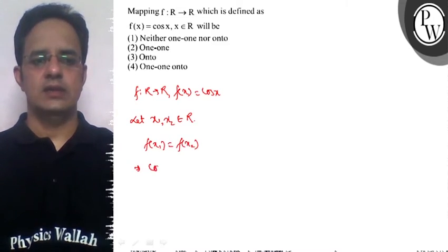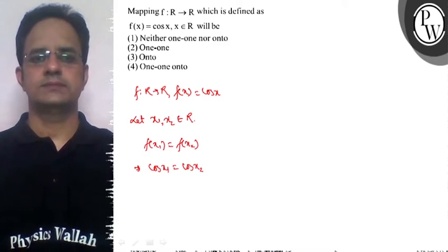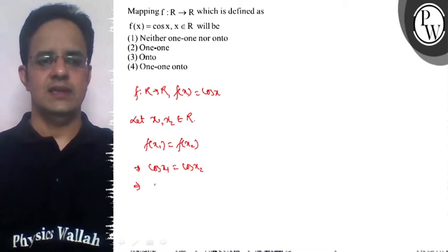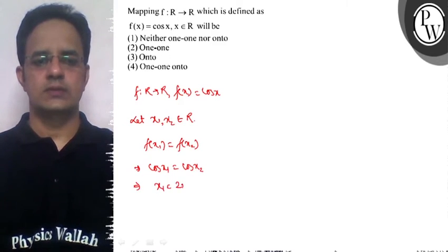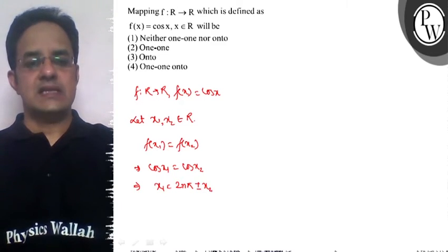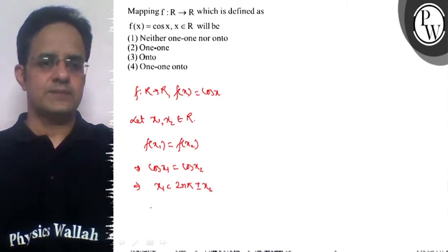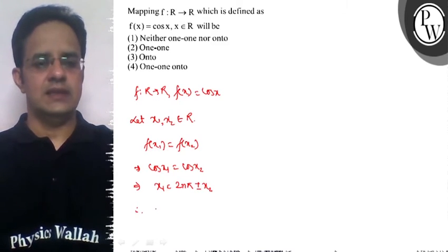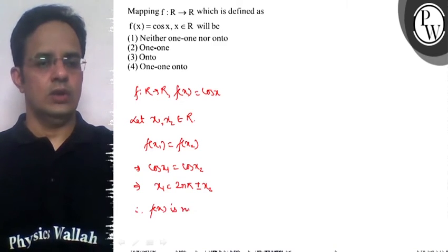This implies that cos x1 equals cos x2, which means that x1 equals 2nπ plus or minus x2. Since x1 = x2 doesn't give us a unique result here, therefore we can say that f(x) is not one-one.